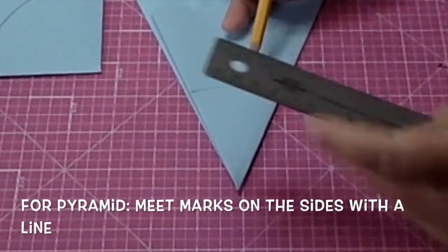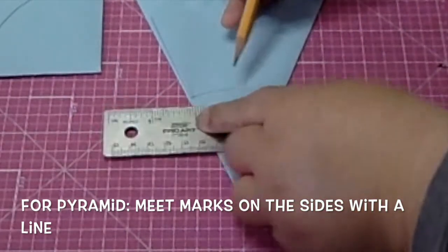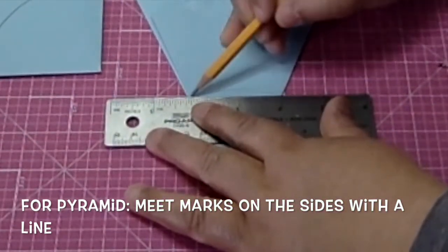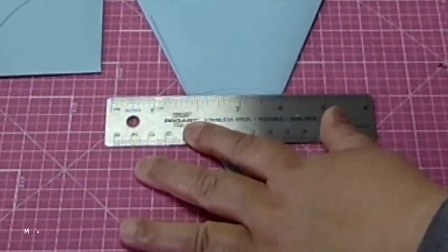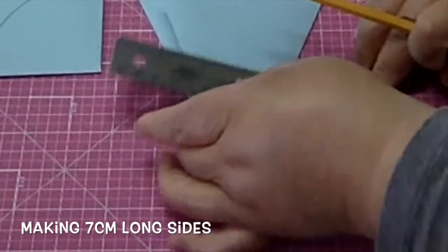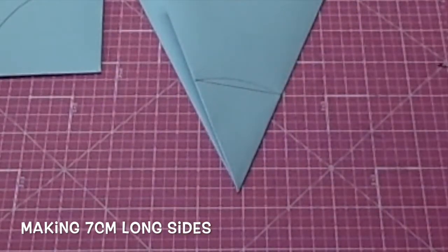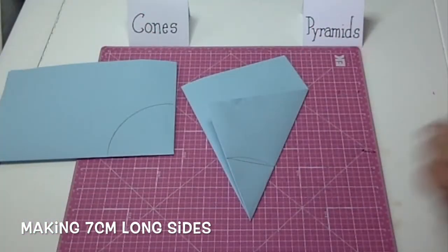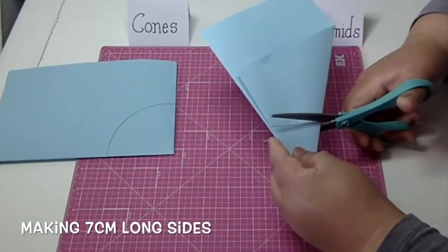The difference is on the pyramid, the edges of that curve are going to serve as my seven centimeter side marks that I have to meet together with a line. That's because the base of a pyramid is a square, so I have to straighten that out.